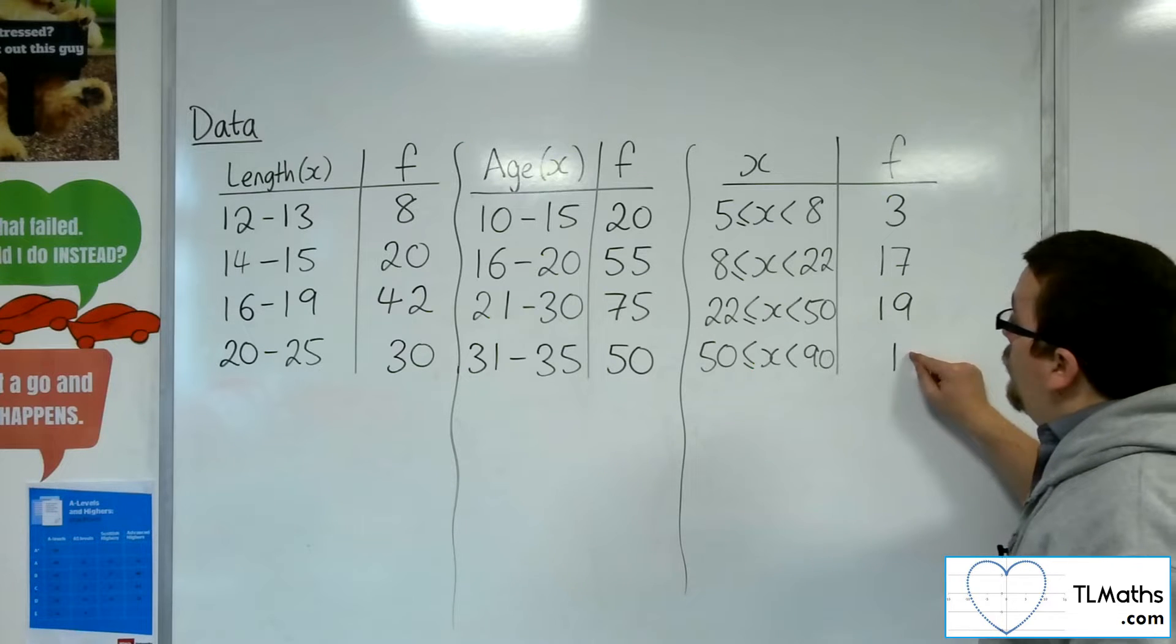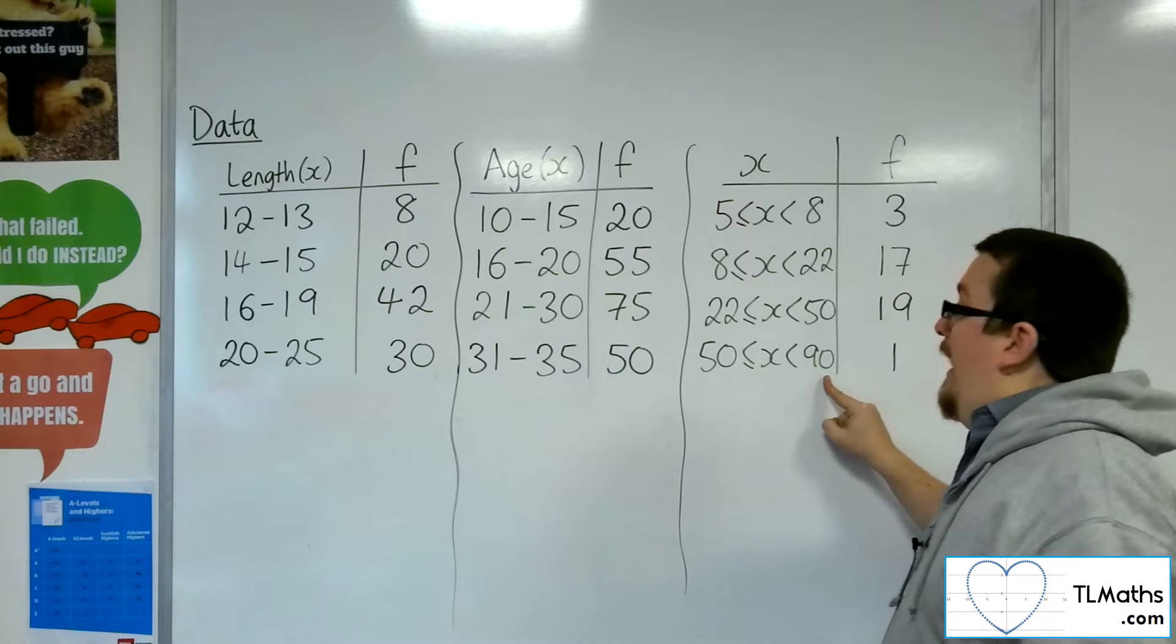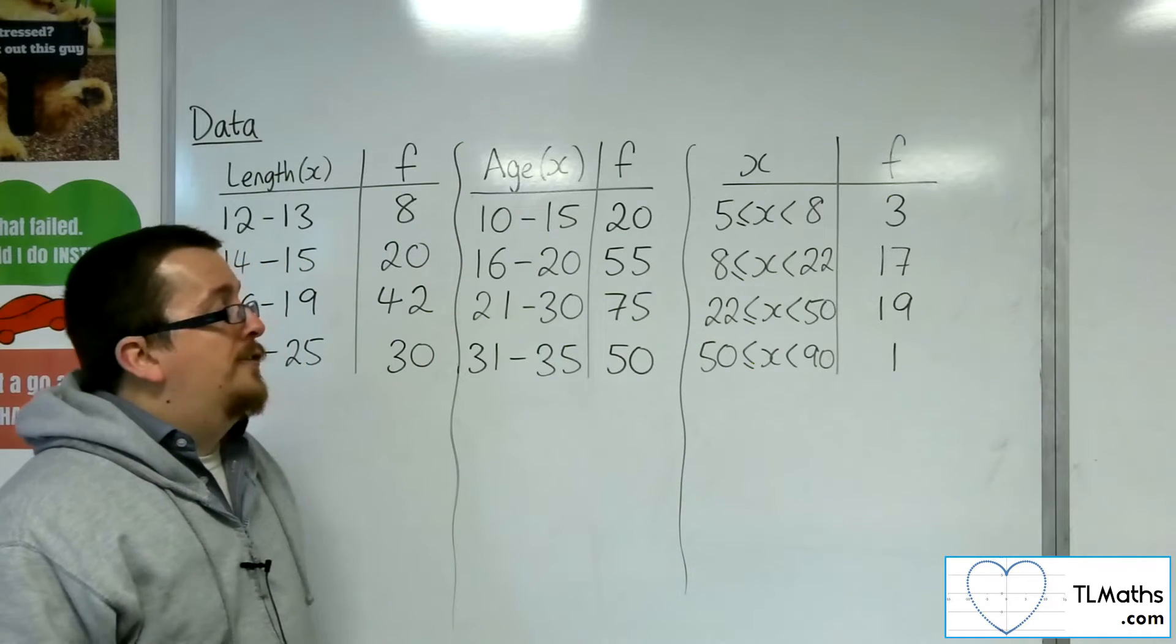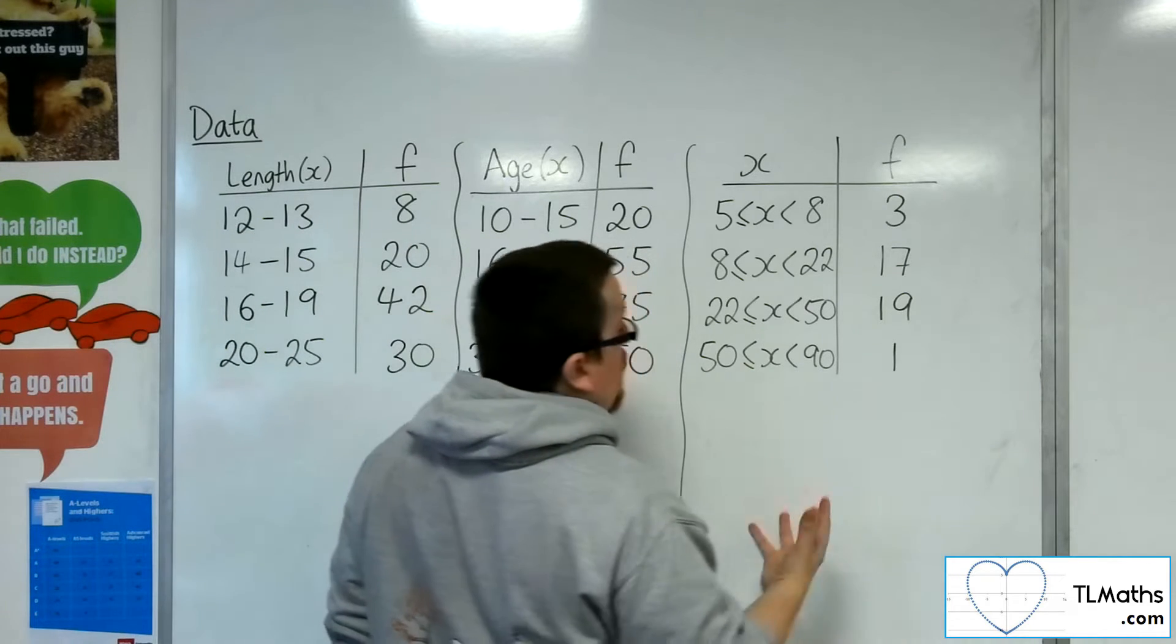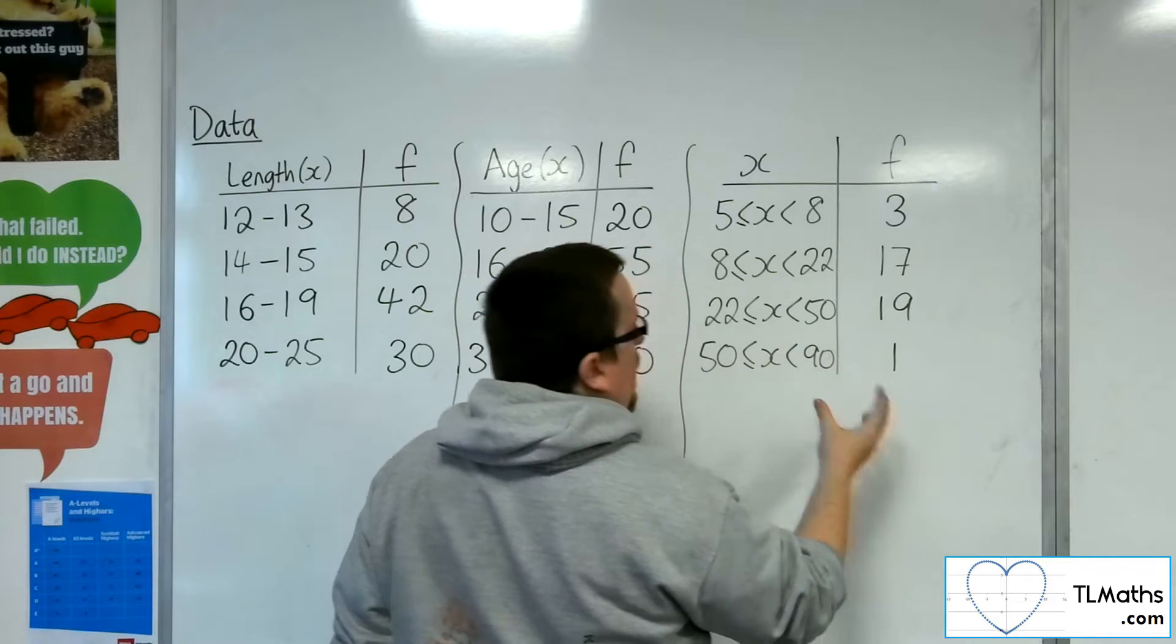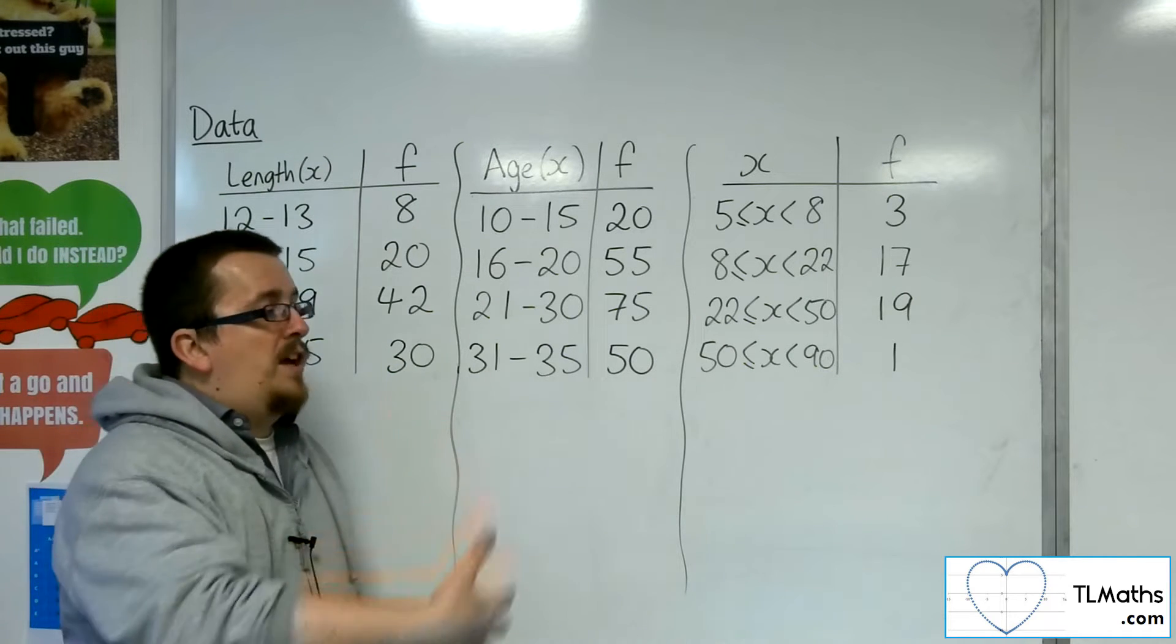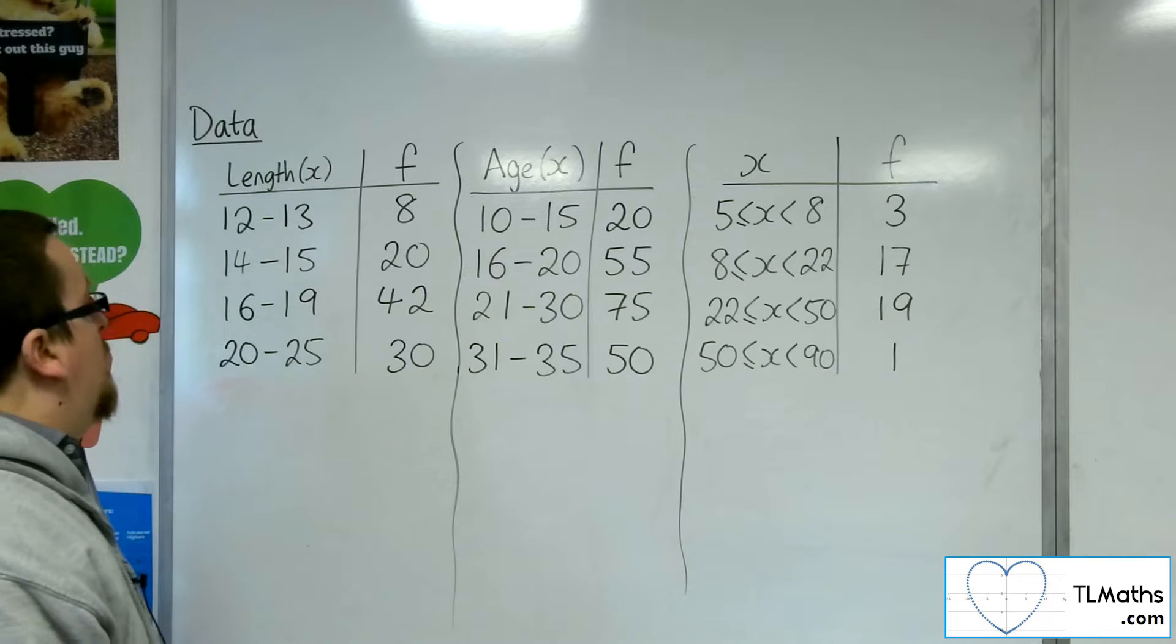For example, we know that there is one bit of data between 50 and 90. However, we don't know how close that is or was to 50 or how close it was to 90. We don't know that, and obviously that would affect the mean value. So all we can do is make an estimate for where that data point is by estimating it as being in the middle of the group. That's the best that we can do. In this video, we're going to go through three examples of estimating the mean from a grouped frequency table.